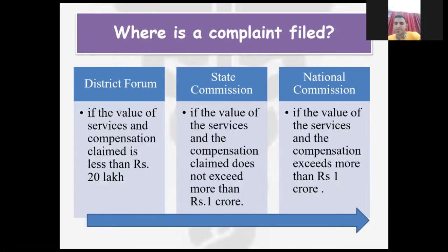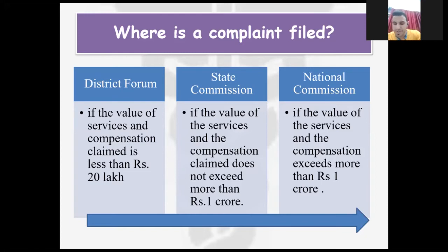The Consumer Protection Act has a three-tier system. If the compensation claimed is less than 20 lakhs, there is a district forum. If the compensation claim is less than 1 crore, then there is a state commission. If the compensation exceeds 1 crore, then it goes to the national commission.